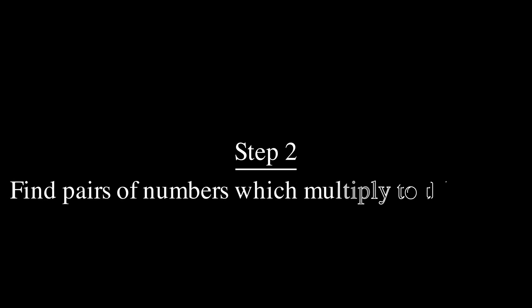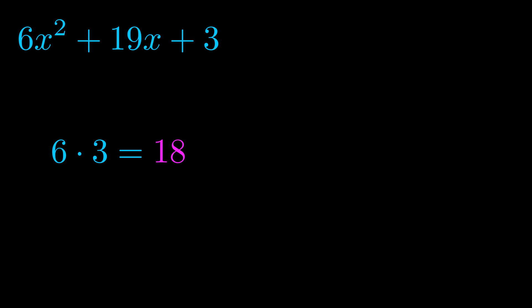Step two is to try to find all of the pairs which multiply to this number. Now it turns out you don't really need to find all of them but go ahead and write down as many numbers as you can that multiply to the magenta value for now. Pause the video and resume when you're ready to continue. Okay here's what I came up with.